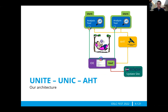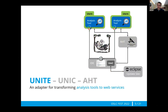The architecture consists of these three components, and this presentation will be divided into three sections. First, I would like to talk about Unite, which is the adapter that makes the transformation of tools into web services possible. Then for the Unite client and Arrowhead tools, I will pass the word over to Jan.